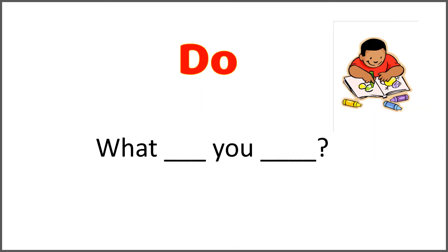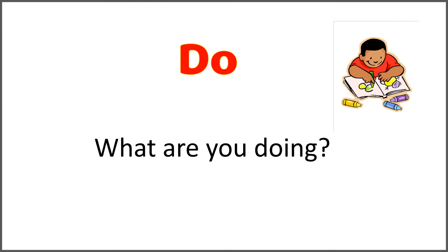The given word is 'do' and the sentence is 'what blank you blank?' Use the word 'do' in the correct form with 'are' to complete this question. And the correct answer is: what are you doing?